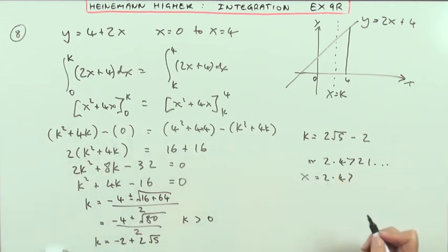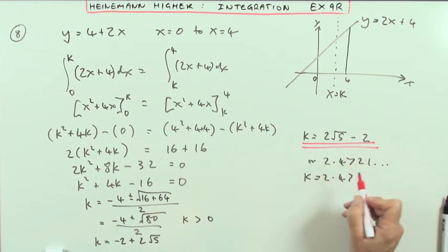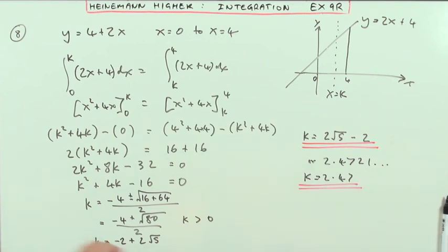So either k equals 2 root 5 minus 2, which is the better answer because it's exact, or k equals 2.47 if you want a decimal approximation to it. That's question 8.